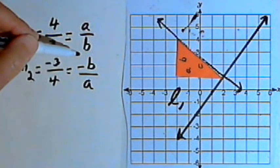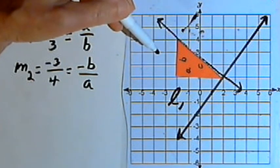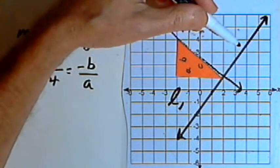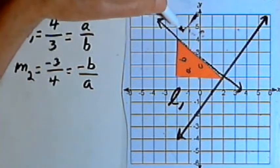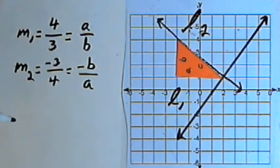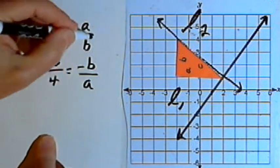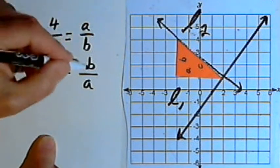So in general, we can say that the slope of a line perpendicular to another line is going to be the negative reciprocal of the slope of the other line. Now another way to look at this would be to say that if we multiply those two slopes together, we're going to get a negative 1. Here's how that would work.